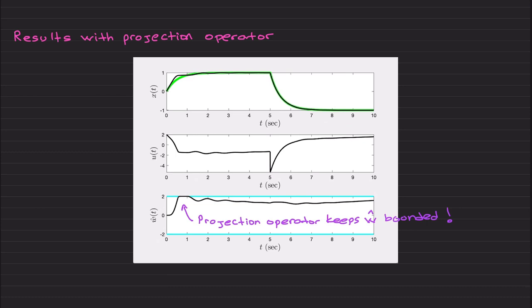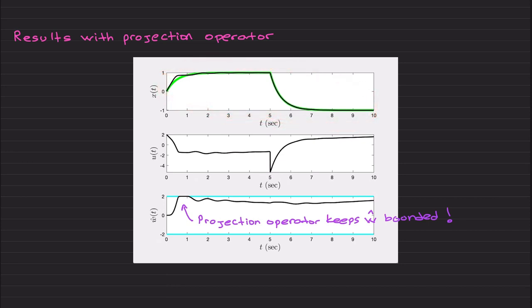We don't exit the bound, so the projection operator keeps w-hat bounded — which was its main intention. This is an acceptable closed-loop system performance: the uncertain system state x is sufficiently close to the reference model state x_r, which captures the ideal closed-loop behavior.